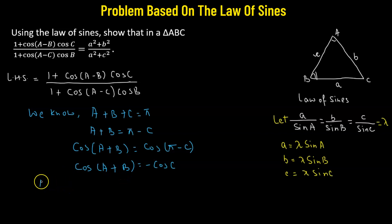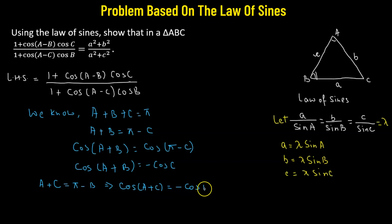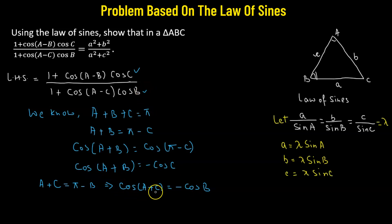Similarly, A + C = π − B, so cos(A + C) = −cos B, meaning cos B = −cos(A + C). Therefore, in the numerator we replace cos C with −cos(A + B), and in the denominator we replace cos B with −cos(A + C).